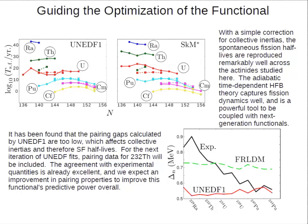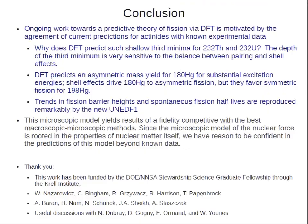I hope you're seeing from these graphs that this microscopic model is actually doing very well — attempting to capture a huge amount of data from across the nuclear chart. To summarize the main conclusions: I studied why DFT predicts such a shallow third minimum for thorium and uranium-232, finding it is very sensitive to the balance between pairing and shell effects, and hopefully we'll contribute to future functional optimizations. We successfully predicted the asymmetric mass yield for mercury-180, representing the very first study of mercury isotopes at finite temperature. The trends in the fission barrier heights and the spontaneous fission half-lives are reproduced remarkably well by UNIDF1. All of this microscopic study is done to build confidence in predictions beyond known data and in communicating our scientific knowledge. Thank you very much for your attention.